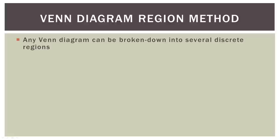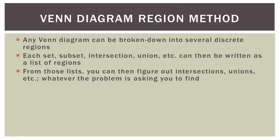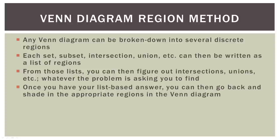Now, what about this Venn diagram region method? It starts with a couple of basic ideas. Remember that any Venn diagram can be broken down into several discrete regions. Each set, subset, intersection, or union can then be written as a list of whatever regions comprise it. So we might have a union of a couple of sets and make a list of all the regions that make up that union. From those lists, you can then figure out intersections, other unions, or whatever the problem might ask you to find.